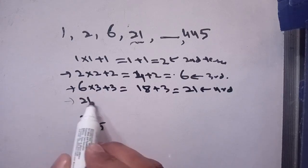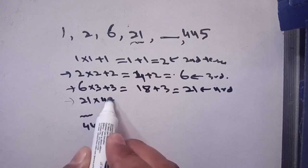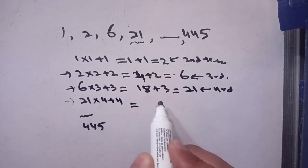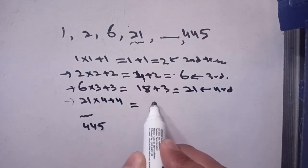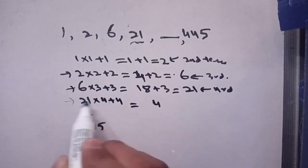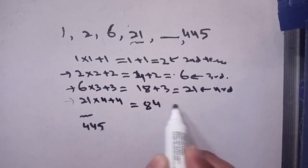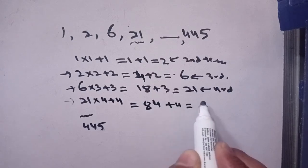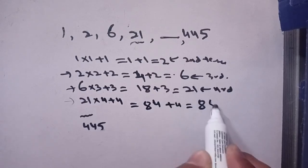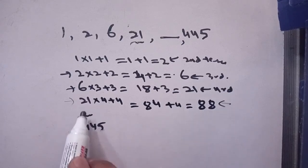Multiply the fourth term by 4 and add 4. It becomes 21 times 4 equals 84, and plus 4 equals 88. Thus our fifth term — the missing term — is 88.